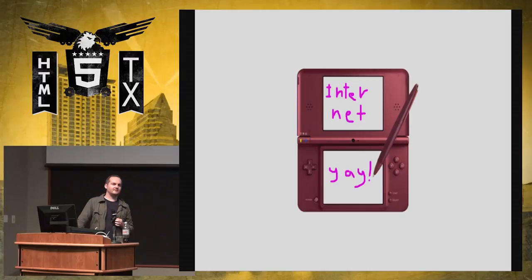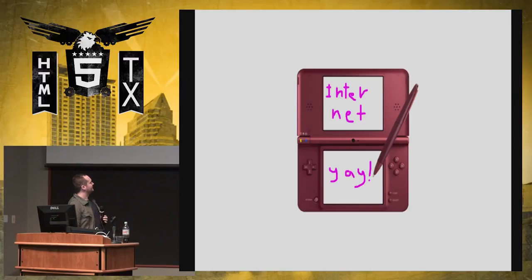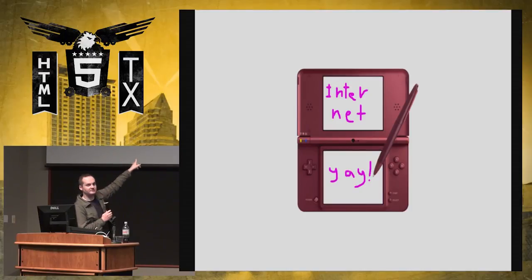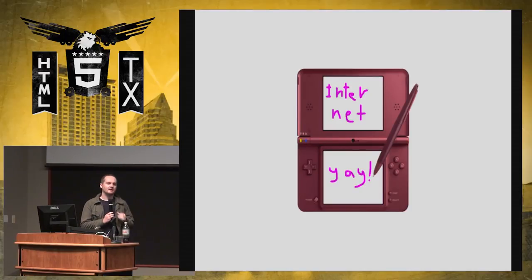A couple of years later, we had the DSi, which had built-in internet. You can see the little green light, which means you're connected to Wi-Fi. By then the hardware was better, and we could do the internet.